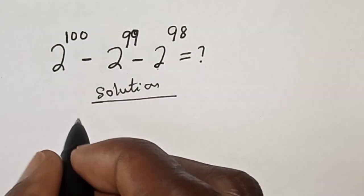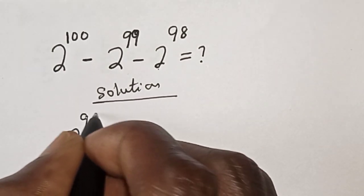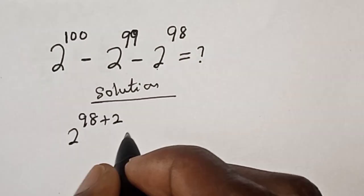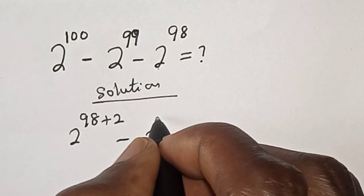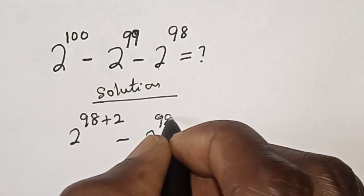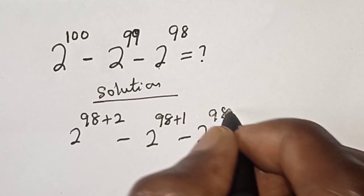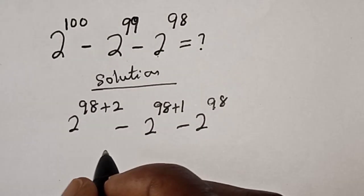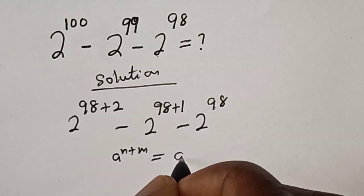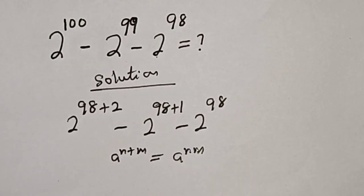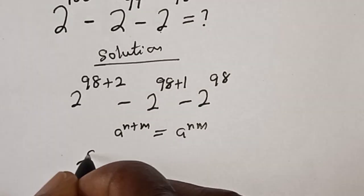2 raised to power 100 can be written as 2 raised to power 98 plus 2, minus 2 raised to power 99 which can be written as 2 raised to power 98 plus 1, minus 2 raised to power 98. Remember this rule: a raised to power n plus m is equal to a raised to power n times a raised to power m.